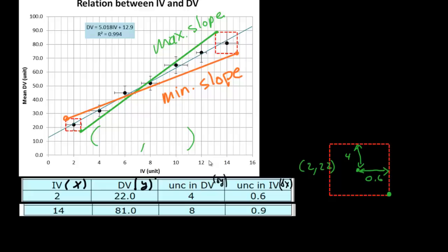So that point has to be in the x direction, 2 plus 0.6, or 2.6. In the y direction, it's got to be 22 minus 4. We've got to come down by 4 units there. 22 minus 4 would be 18.